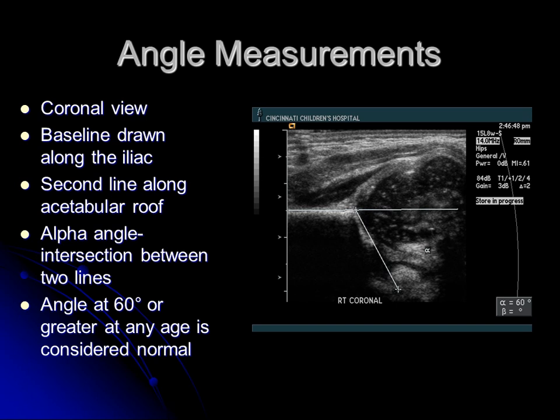Angle measurements are done on the coronal view. A baseline is drawn along the iliac, and then a second line is drawn along the acetabular roof. That angle is called the alpha angle, and it should be 60 degrees or greater if normal. This is kind of like the opposite angle to the acetabular angle we do on plain films, where you use a line connecting the tri-radiant cartilage and measure the angle of the acetabulum in relation to that — we're looking at the same thing, just in a different way.